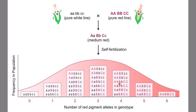Genotypes with four copies of red pigment-producing alleles give a slightly darker shade of red. Genotypes with five copies of dominant alleles produce an even darker shade of red. In the last combination, where all alleles are in homozygous dominant condition, the extreme dominant character is expressed — dark red color is produced.